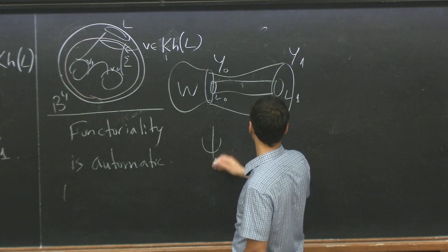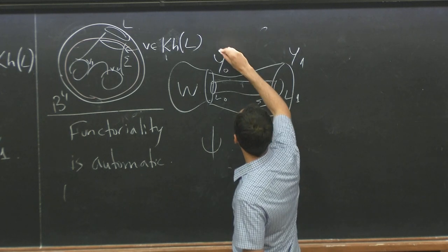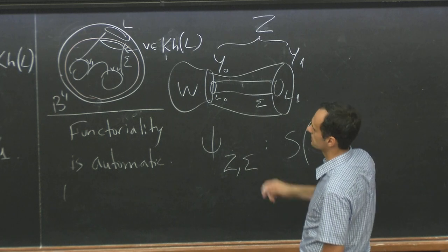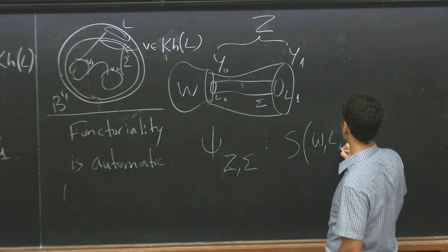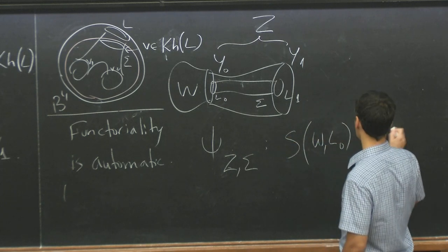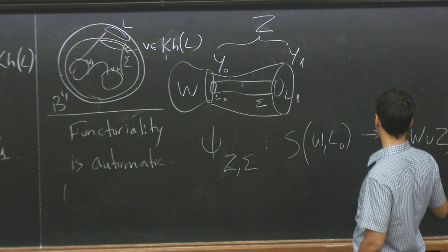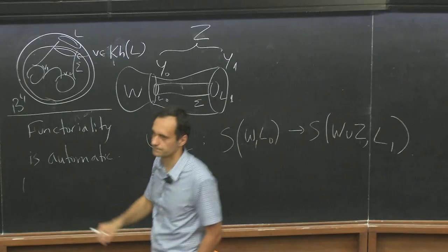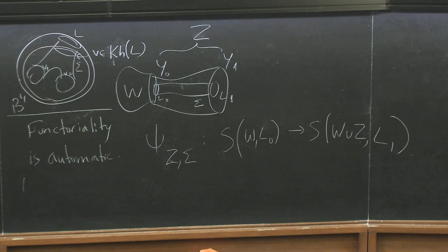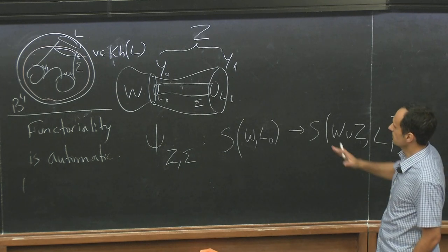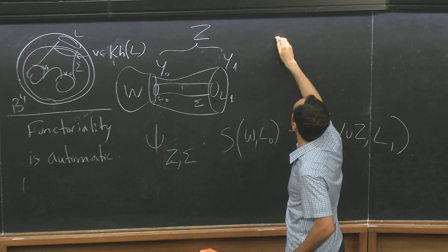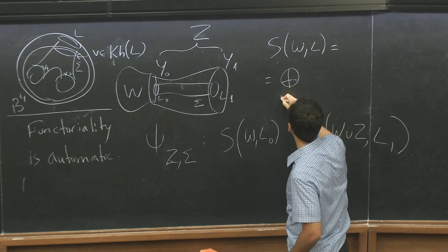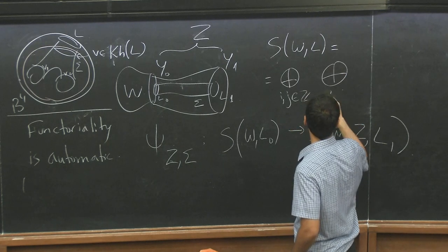Then I get the map, let's call it psi of, yeah, I mean, this can be something, let's call it Z, so psi of Z and sigma. It would go from the skein module, sorry, the skein lasagna module of W relative to L0 to the one of W union Z relative to L1. Just by adding this sigma to whatever we had in here. Right, so this is functorial under cobordisms.